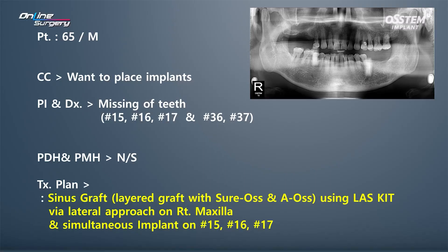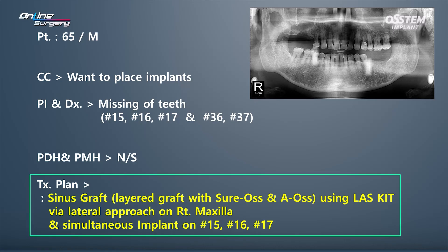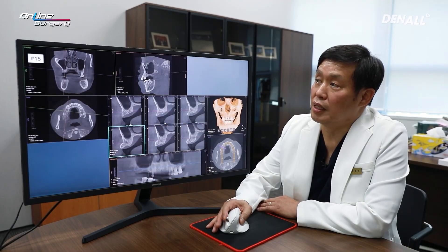There is no special history in terms of PMH or PDH. For the upper right, sinus graft along with the lateral approach should be done. The Last kit will be used for surgery. For the bone graft, I decided to use a layered bone graft — Sureos, the allogenic bone on the bottom, and Leos, the bovine bone xenograft on top. At the same time, I decided to place three implants at once.